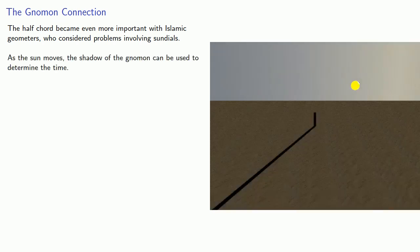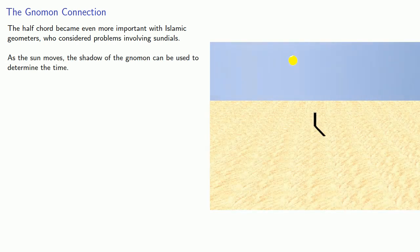The half chord became even more important with Islamic geometers, who considered problems involving sundials. As the sun moves, the shadow of the gnomon can be used to determine the time.